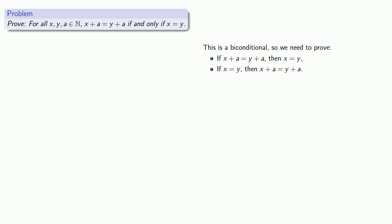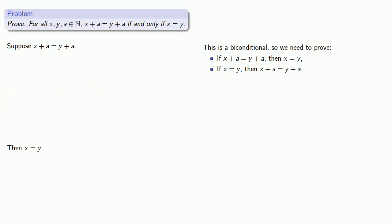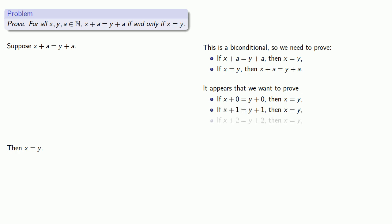Let's try to prove our first conditional. We can always assume the antecedent of a conditional, so suppose x plus a is equal to y plus a, and we want to conclude that x is equal to y. Rather than proving this for any a directly, it appears we want to prove it for x plus 0, x plus 1, x plus 2, and so on.